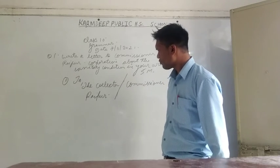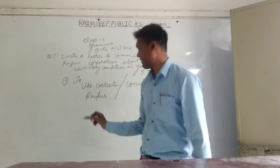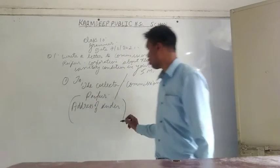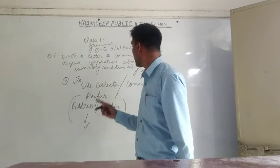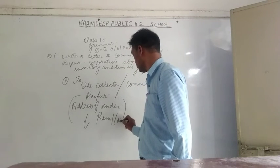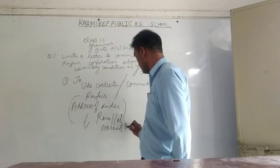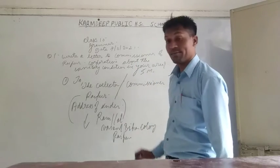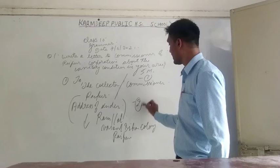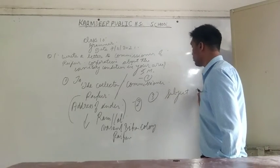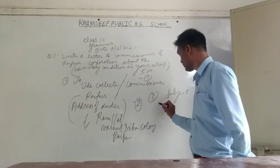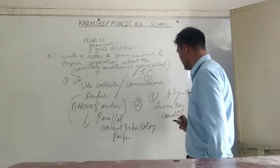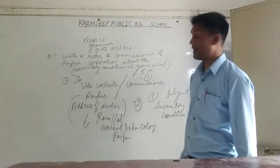Now, subject — before you write a subject, here some person will write their address. We can put it here also, at the last. Then subject — the thing given to your students. That subject is third. First, second, third is subject. From the question: the unsanitary condition of your area.